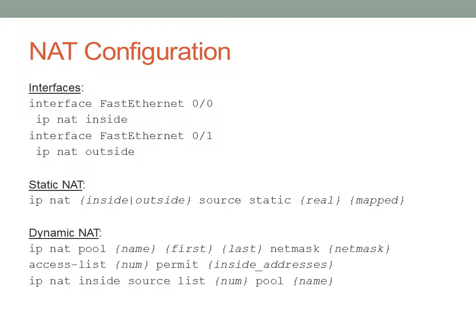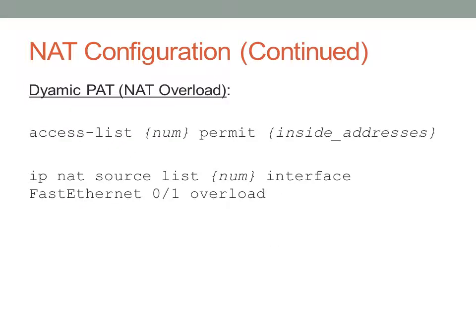For dynamic NAT, you create a NAT pool specifying the first and last address, and an access list defines which inside hosts have access to that pool. The command is 'ip nat inside source list' referencing the access list and the pool name. For dynamic PAT, you again define an access list, then use 'ip nat inside source list [number] interface [interface]' with 'overload' at the end — this is why it's called NAT overload.